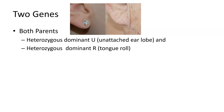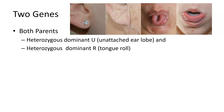They are also heterozygous for the dominant R tongue roll gene. This is an interesting gene because it determines whether or not you are able to roll your tongue. If you can roll your tongue, it looks like the picture on the left. If you can't, you might be able to make a little curve up, but it won't go any farther. This is basically due to the lack of a certain muscle that is keyed by this gene.